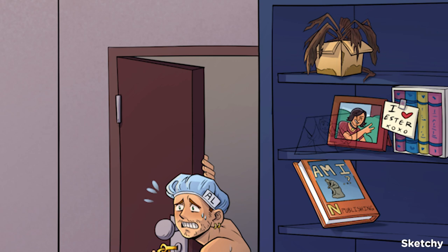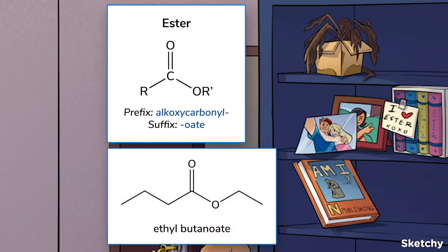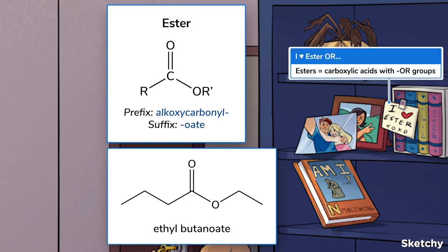Up next, esters are like amides but with an oxygen in place of the nitrogen, so they have an OR group. When naming esters, we can use the prefix alkoxycarbonyl or the short suffix -ate. We've represented esters with this "I love ester" photo of someone's high school sweetheart. They love ester — or is this a girl from chem lab in the other picture? This ester-or dilemma can help you remember that esters have an OR alkoxyl group in them.